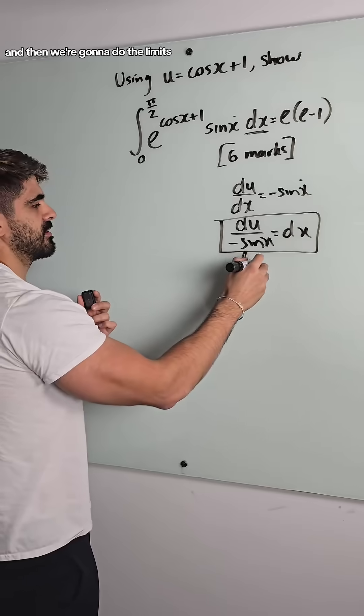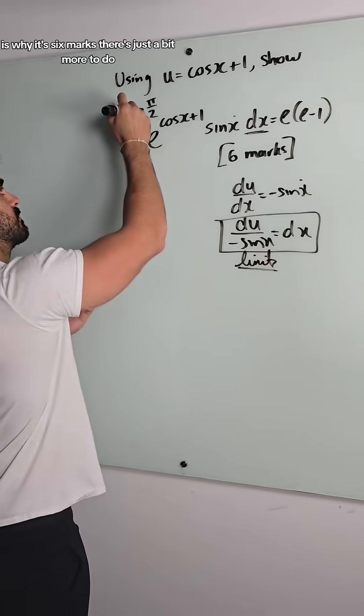So we're going to swap these around. We get du divided by minus sin x is dx. And then we're going to do the limits. This is why it's six marks. There's just a bit more to do.